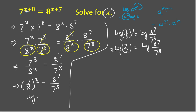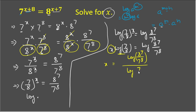So we can write x·log(7/8) equals log(8^7 / 7^8). To find x, we divide both sides by log(7/8), giving x equals log(8^7 / 7^8) divided by log(7/8). This is the expression for x, which we will now simplify.